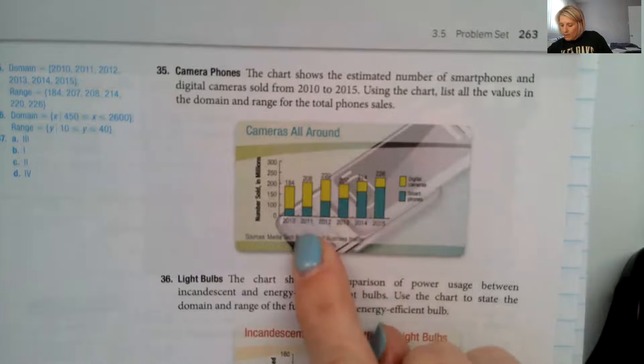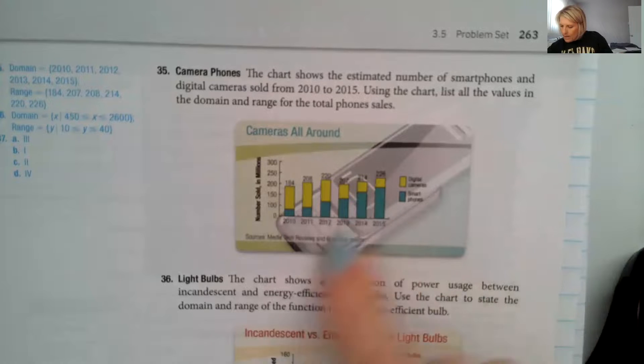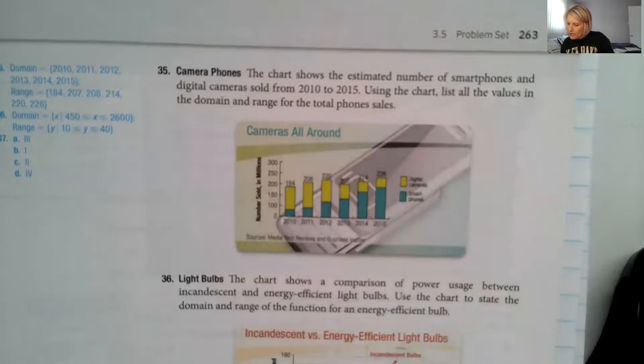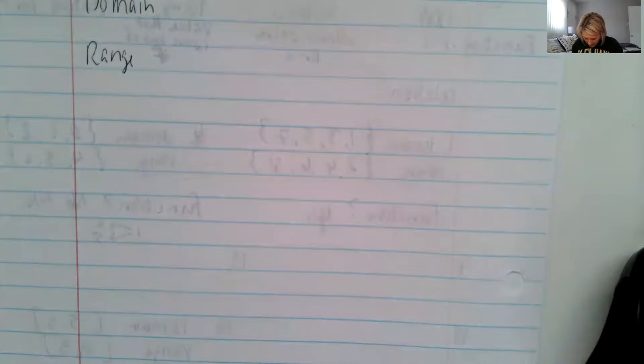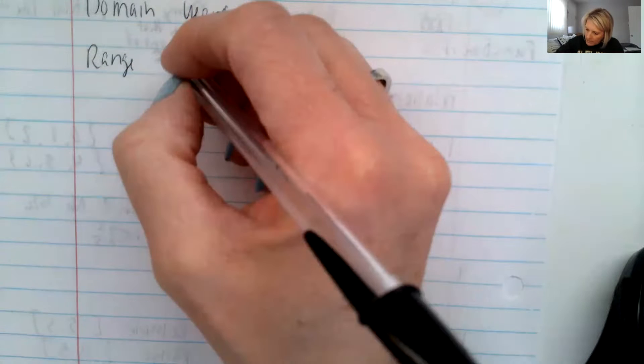So total phone sales is digital cameras and smartphones, and they want a total phone sales. So we're going to do the top added together, and they want to know the domain and the range. So the domain is going to be, the years is our domain and our range is going to be sales in millions.